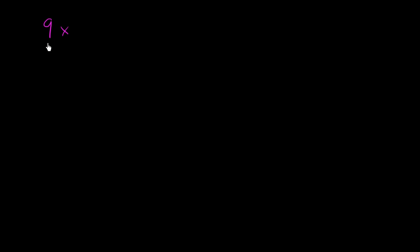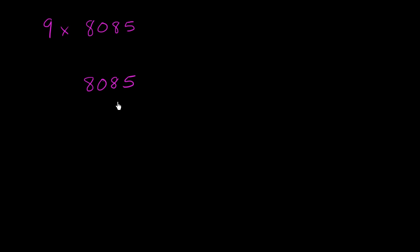Let's multiply 9 times 8,085. That should be a pretty fun little calculation to do. So like always, let's just rewrite this. I'm going to write the 8,085, and the 9 right below it, with our multiplication symbol. And now we're ready to compute.